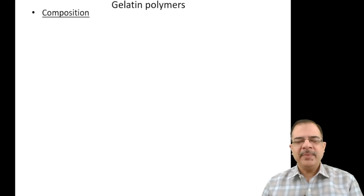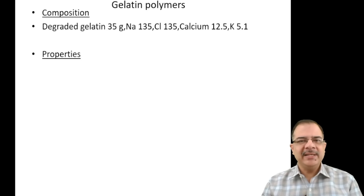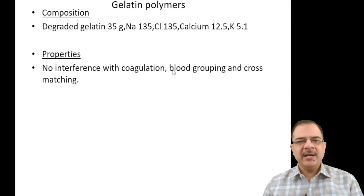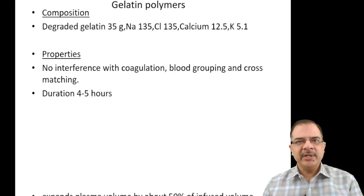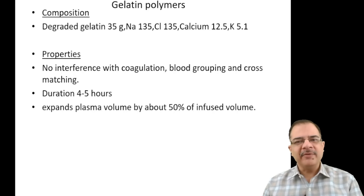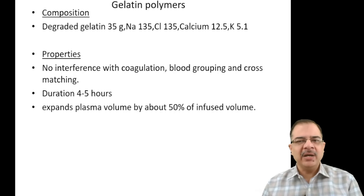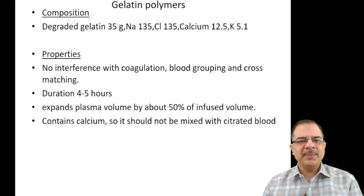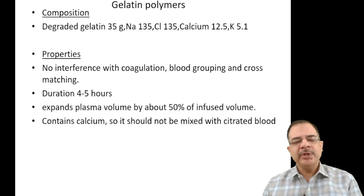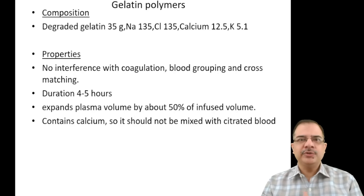Gelatin polymers (Haemaccel) contain degraded gelatin of 35 grams plus electrolytes. They do not interfere with coagulation, blood grouping, or cross-matching. Duration of action is 5 hours and they expand plasma volume by 50% of the infused volume — giving 500 ml achieves 250 ml plasma expansion. They contain calcium, so must not be mixed with citrated blood, as calcium interferes with coagulation.